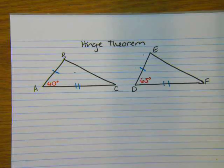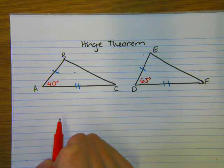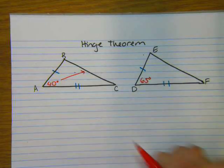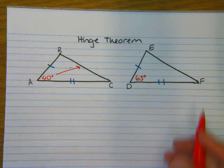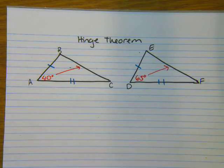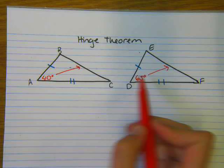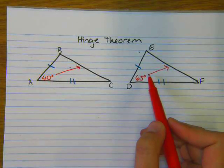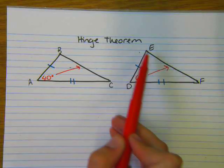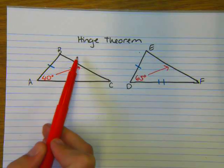So we know that the side that matches up with that one, so angle A matches up with side BC, angle D matches up with side EF. And we know that the larger included angle, 65 is larger than 40, results in the larger third side. So our third side is EF, and our third side for this triangle is BC.